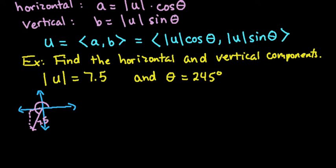Okay, so it doesn't matter how you write it. If you prefer to write it as an ordered pair, that's fine. I'm just going to write it as a equals and use the formula. So a is equal to the magnitude, which is 7.5, times cosine of 245 degrees. And I will just plug that into my calculator in just one second.